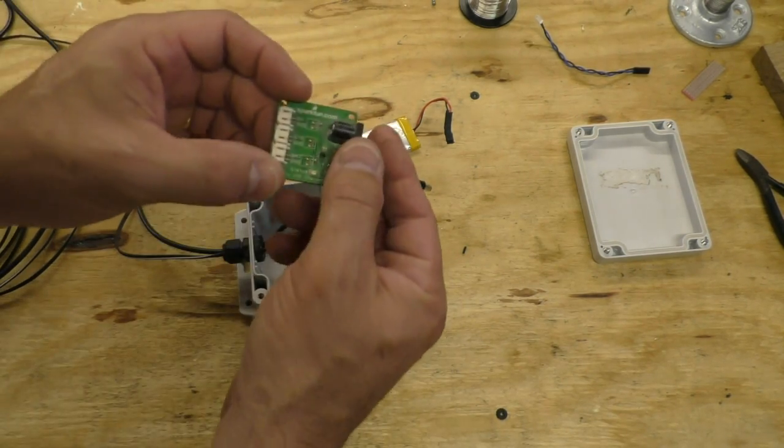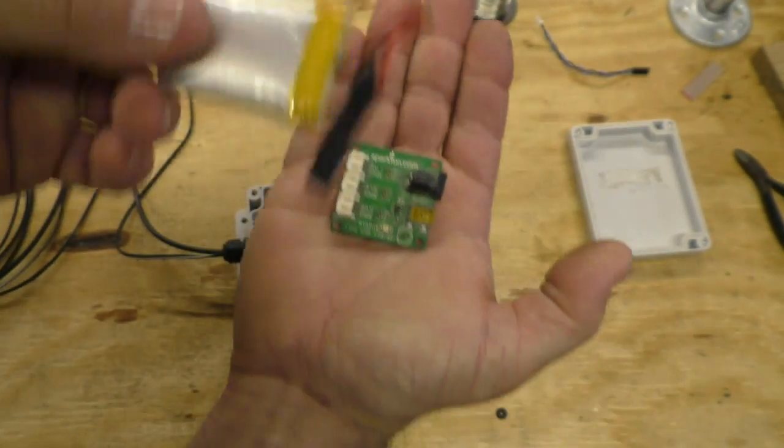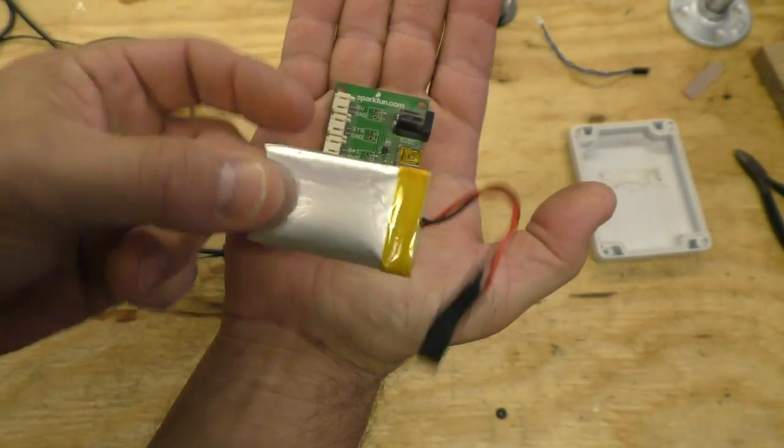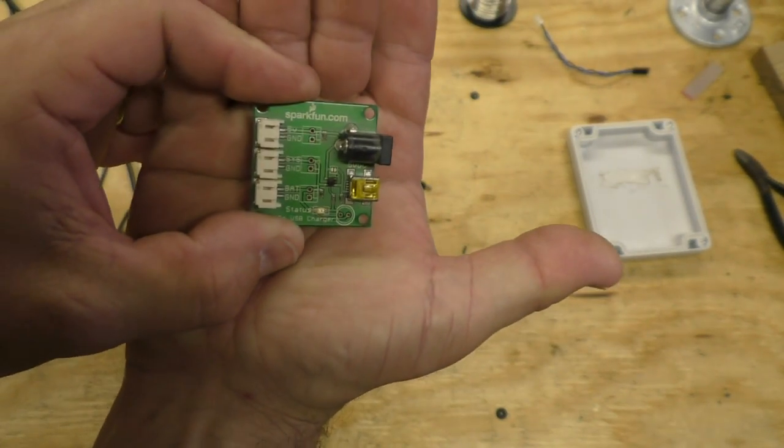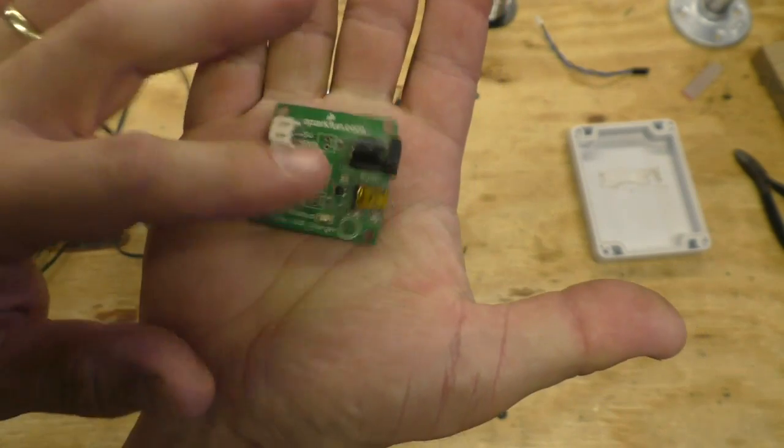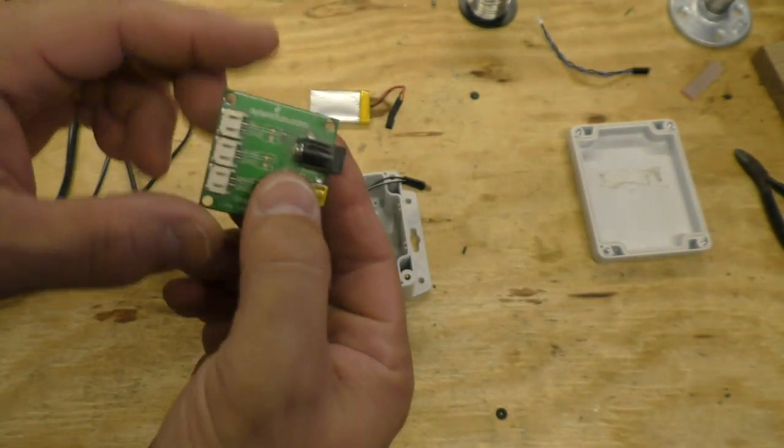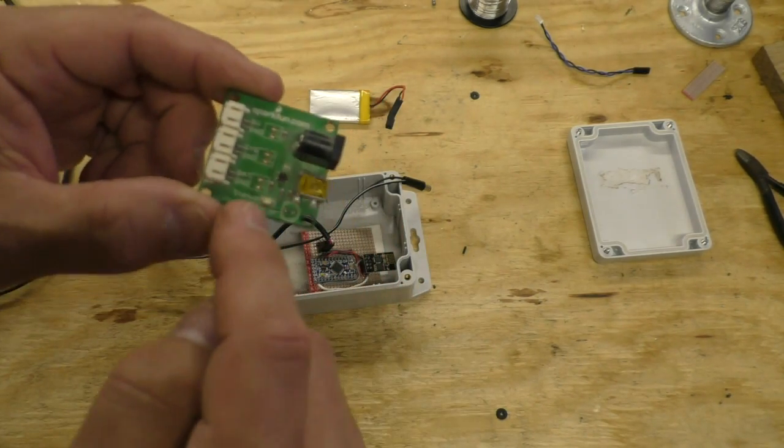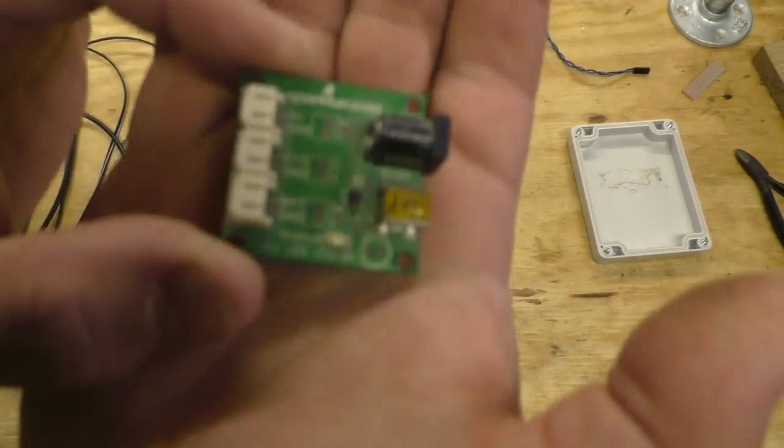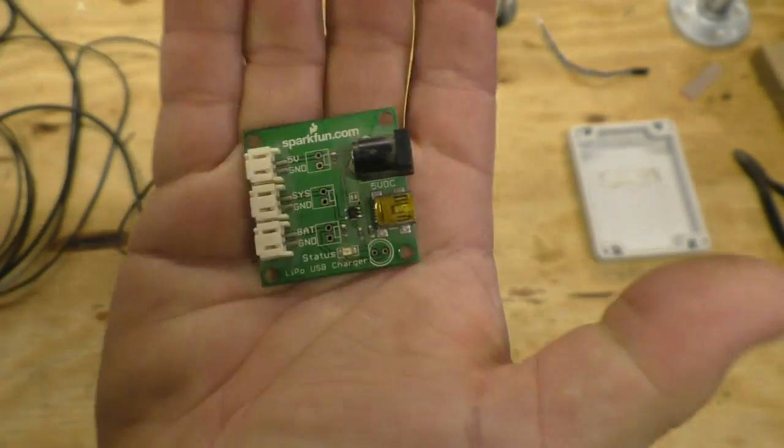And I was going to use this charger circuit here. I was going to power the whole thing with this lipo battery and this charger circuit, hook it up to the solar panel. I've used this board before on other solar projects and it worked pretty good, but as luck would have it, I hooked the battery up backwards and I released all the blue smoke out of that little chip right there.